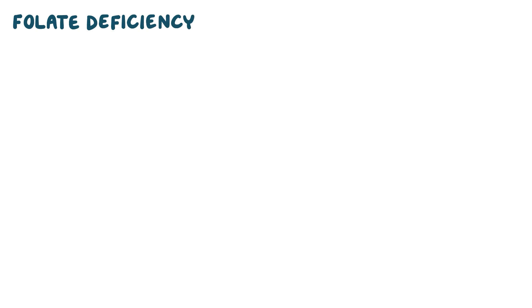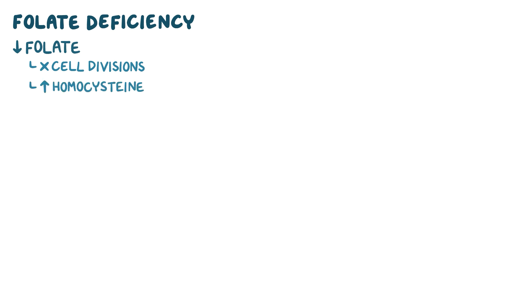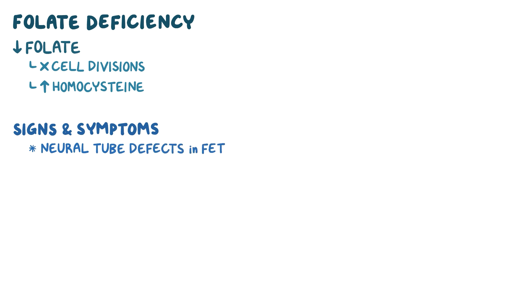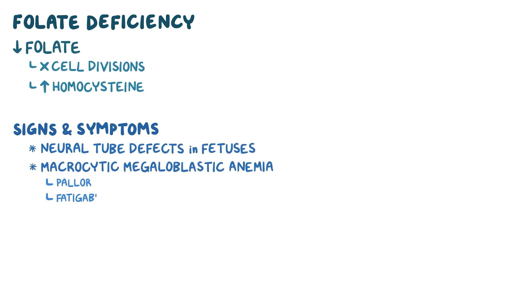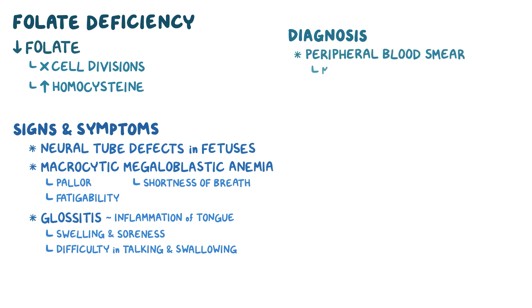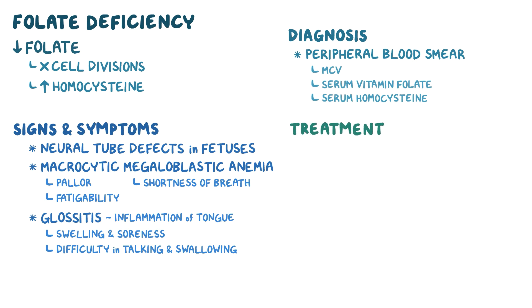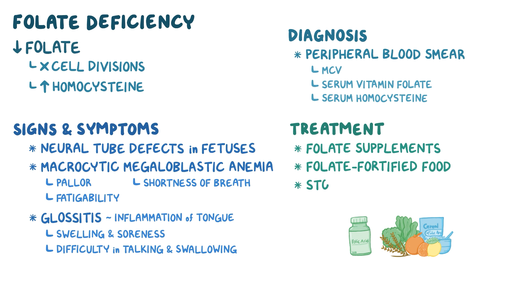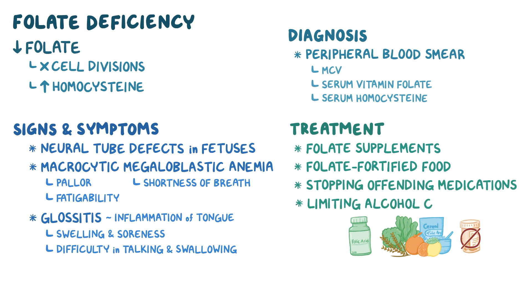Quick recap: Folate deficiency is a clinical condition caused by low levels of folate in the body, which impairs cell division and causes excess levels of homocysteine in the body. This can lead to neural tube defects in fetuses, macrocytic megaloblastic anemia causing pallor, fatigability and shortness of breath, glossitis or inflammation of the tongue leading to swelling and soreness, and difficulty in talking and swallowing. Diagnosis can be made by doing a peripheral blood smear, measuring the MCV and serum levels of folate, as well as serum homocysteine levels. Folate deficiency is treated with folate supplements, folate-fortified food items, by stopping the offending medications or limiting alcohol consumption.